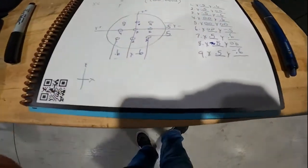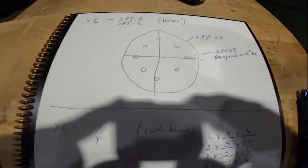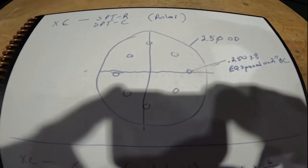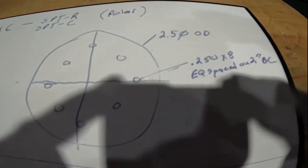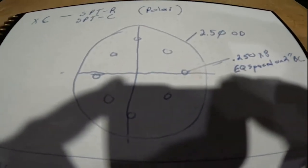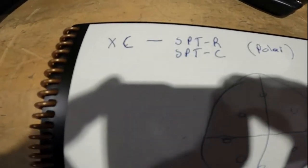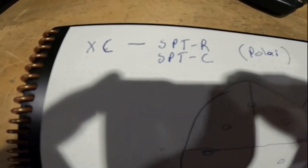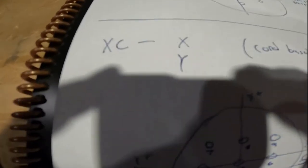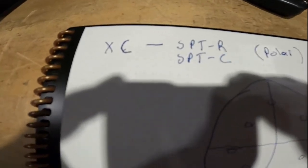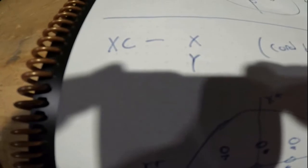The other video showed us how to do a bolt circle using the radius and the degrees between each hole — polar coordinates. You program that as XC, SPTR, SPTC. Now we're going to use XC XY instead — using XY coordinates.